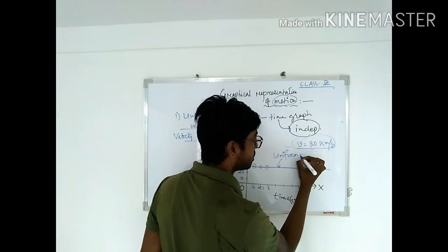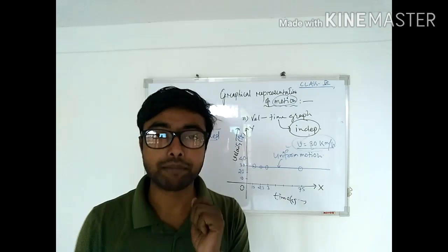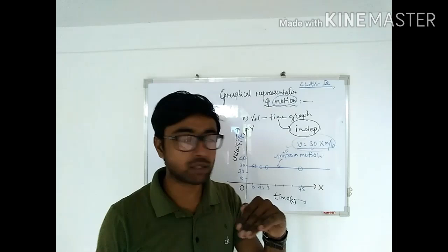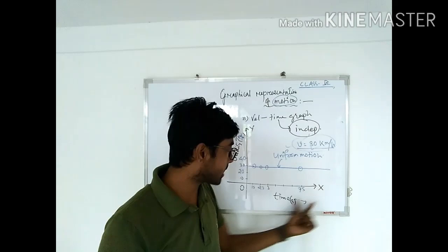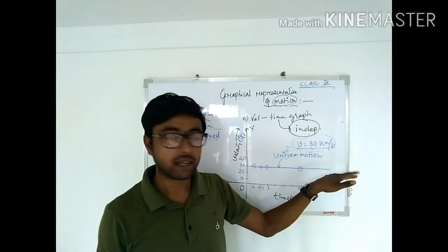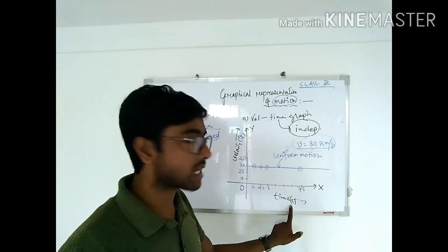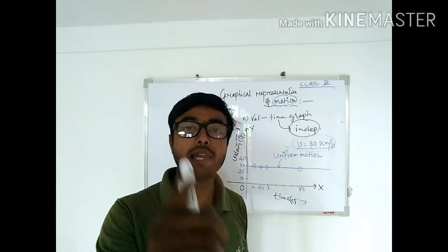If you join all the points, you get the graph. For uniform motion, the velocity-time graph is a straight line, and this straight line is parallel to the time axis (x-axis). So the graph for uniform motion on a velocity-time graph is always a straight line parallel to the time axis.